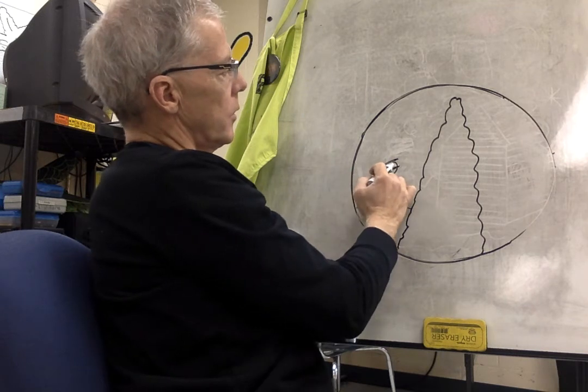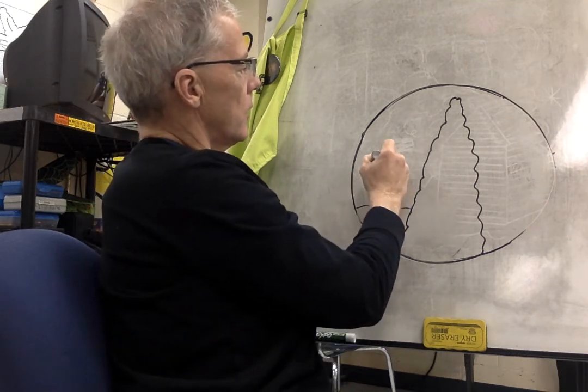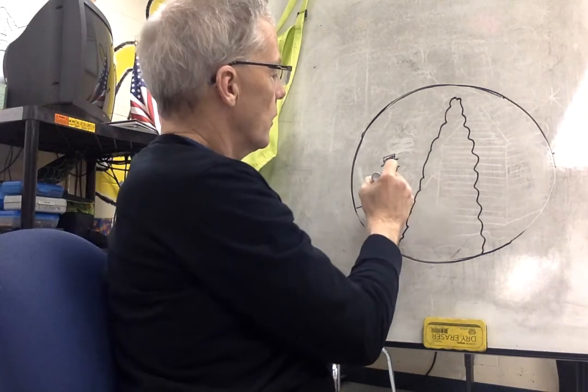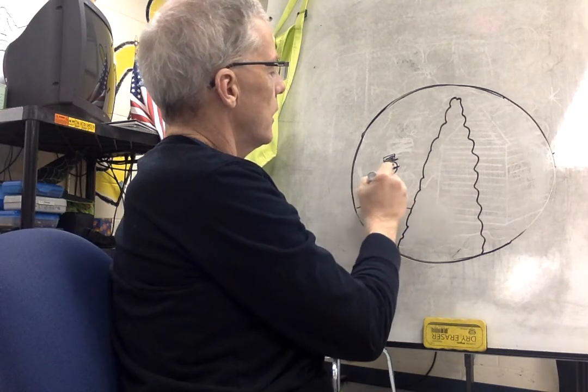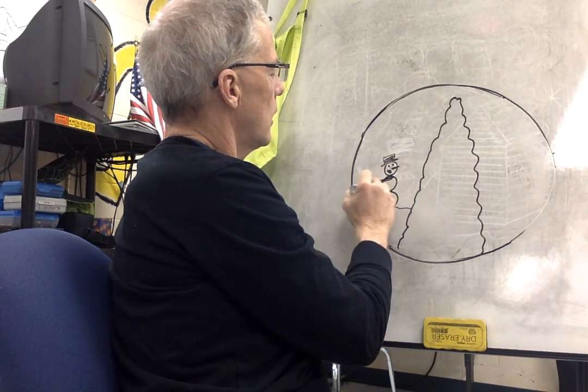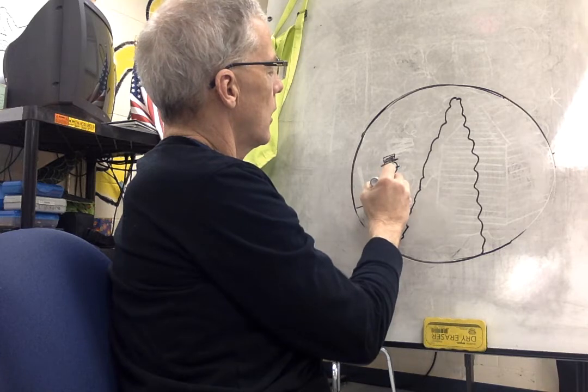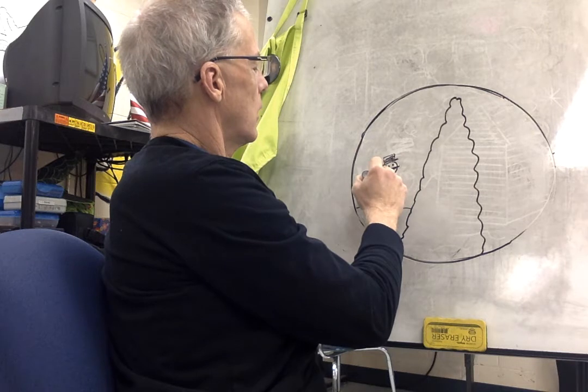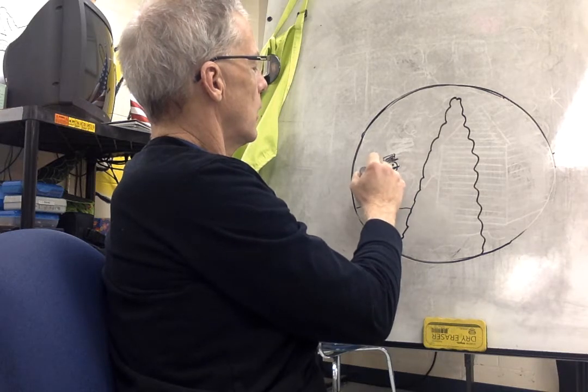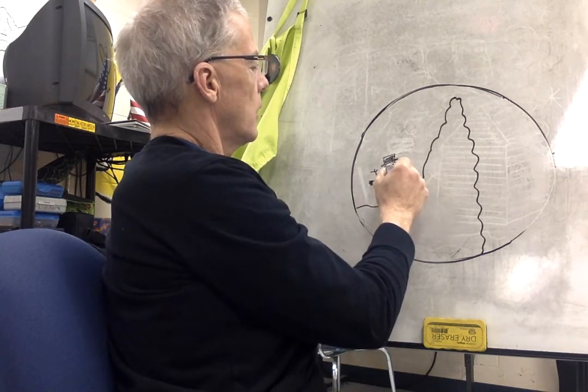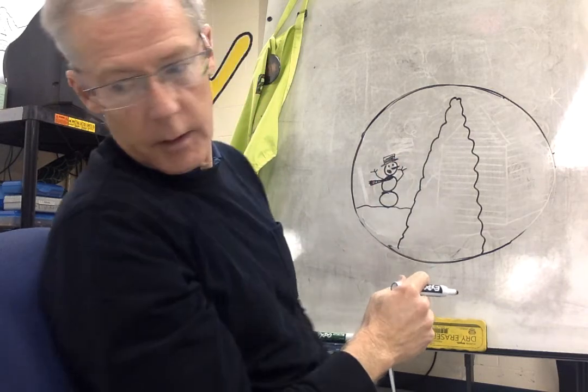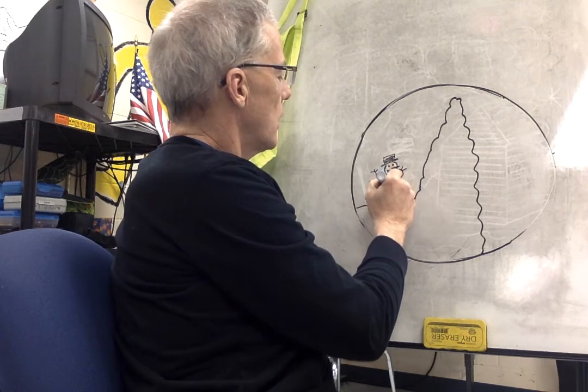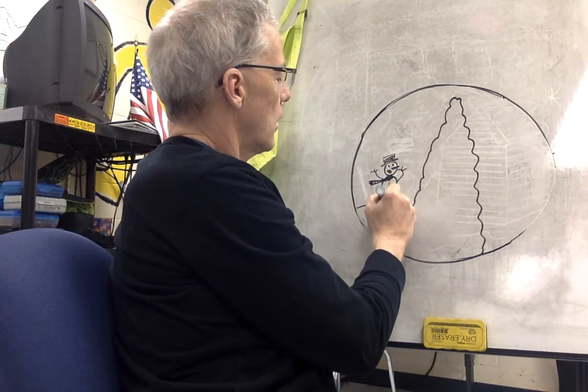Put one eye higher than the other one. So it looks like he's looking up. If you want, you can have a scarf kind of blowing in the wind there. Have his hands up. Like he's happy. And if you want, you can put some buttons all the way down. Like that.